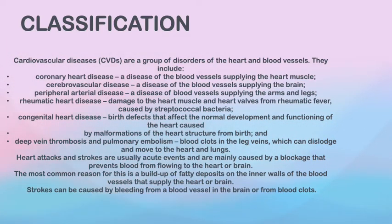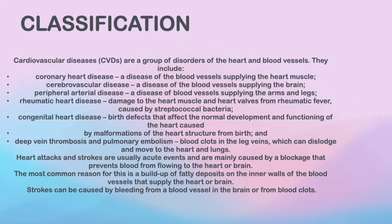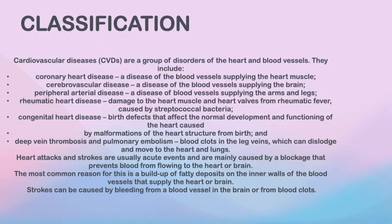Deep vein thrombosis, heart attacks, and stroke are usually acute events and are mainly caused by blockages that prevent blood from flowing to the heart or to the brain. The most common reason is the buildup of fatty deposits on the inner wall of blood vessels. Stroke can also be caused by bleeding from a vessel in the brain or a blood clot.